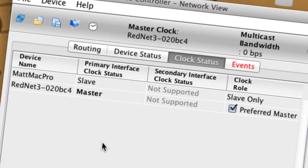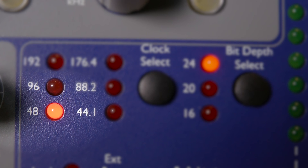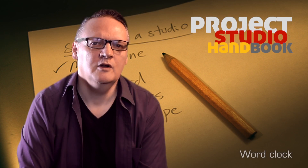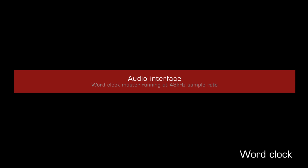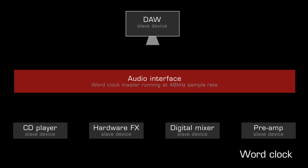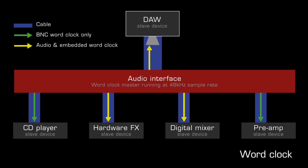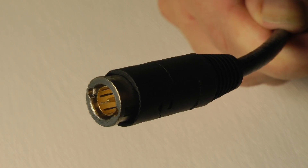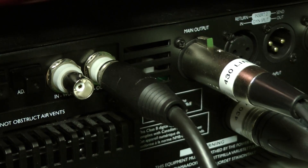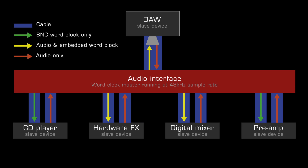The clock master device is set to a sample rate which all other devices must follow. Word clock is a timing signal passed between devices on a digital audio network. One device is set as the clock master, and its job is to generate and send a word clock signal to the other devices on the network, each of which are set to slave to it. This ensures that the timing of all devices is synchronised. Word clock is embedded in almost all digital audio signals, or can be sent as a separate signal, commonly referred to by the connector it uses: BNC. The word clock signal embedded in an AES-3 signal is also known as AES-11.